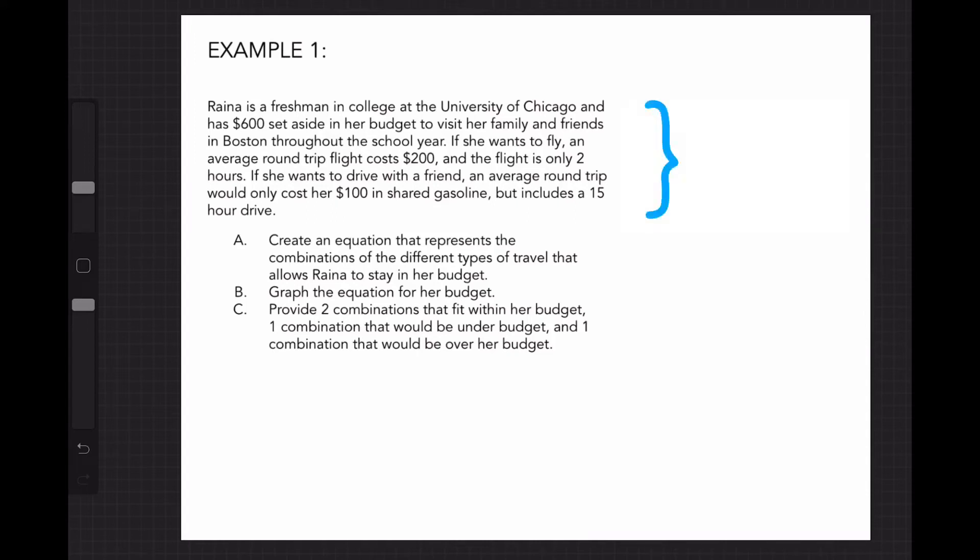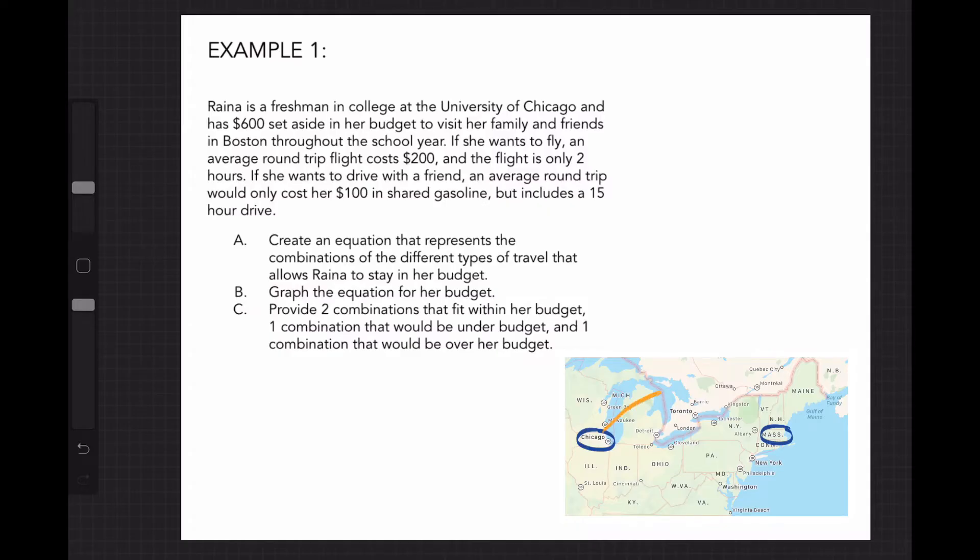Raina is a freshman in college at the University of Chicago and has $600 set aside in her budget to visit her family and friends in Boston throughout the school year. If she wants to fly, an average round-trip flight costs $200 and the flight is only two hours. If she wanted to drive with a friend, an average road trip would only cost her $100 in shared gasoline but includes a 15-hour drive.